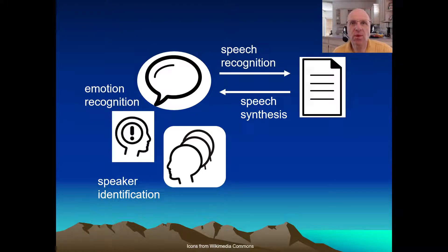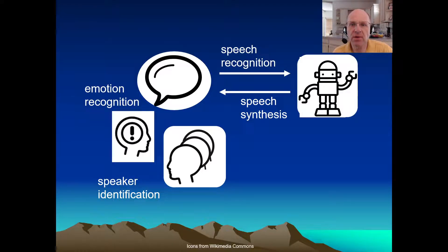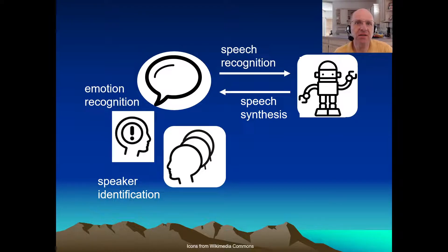So those are some component-level technologies. If you want utility in a real system — for example, a robot that can talk with people as it's doing some work with them, or even Siri or Alexa — you need more. For speech synthesis, you'll need to go beyond mere text-to-speech. Beyond the words, you need to convey something about the robot's intents or awareness of the context.